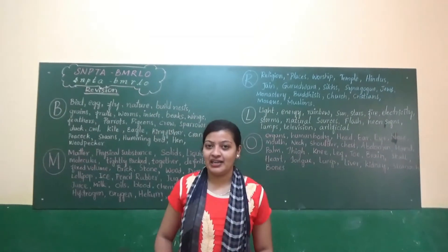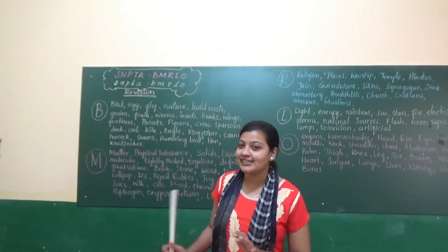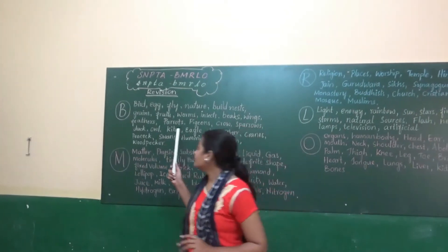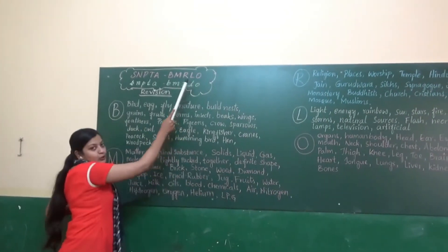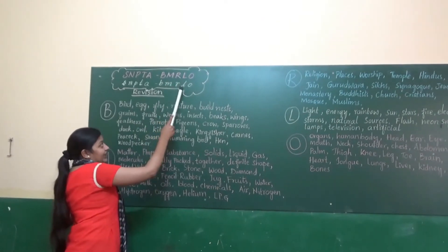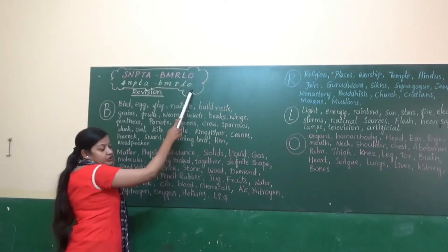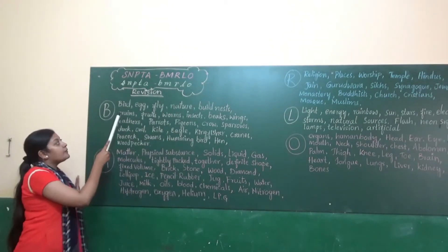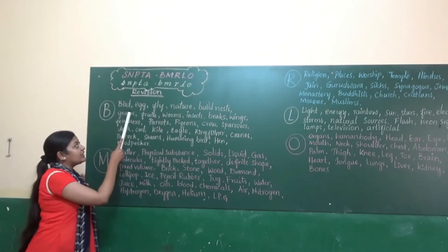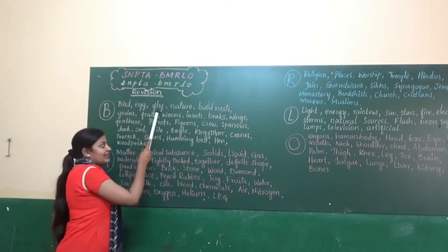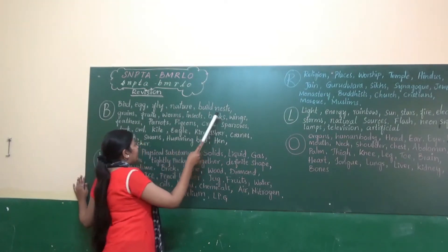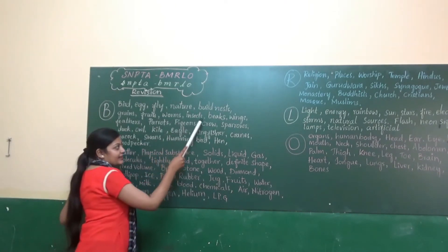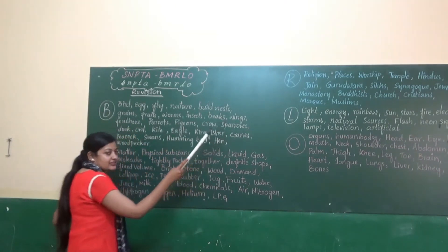Next we will go with B, M, R, L, O. As we have seen S, N, P, T, A — next B, M, R, L, O. Upper case and lower case B, M, R, L, O. Please make sure to teach your kids both. B — Birds: egg, fly, nature, grains, fruits, worms, insects, beaks, wings.